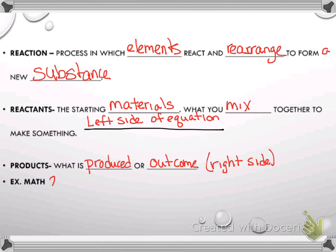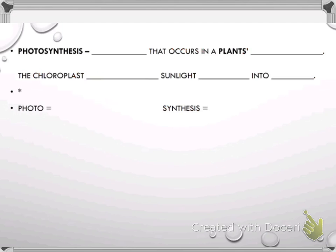Now think of math. If you have a problem 2 times 4 equals 8, what is 8? 8's your product. So 8 is on the right side of the equation, on a traditional equation, and on the right side is your products. In this instance, if we're using this math example, 2 times 4 would be reactants because that's what you're mixing together to get the product. So you should be writing down anything I write down.